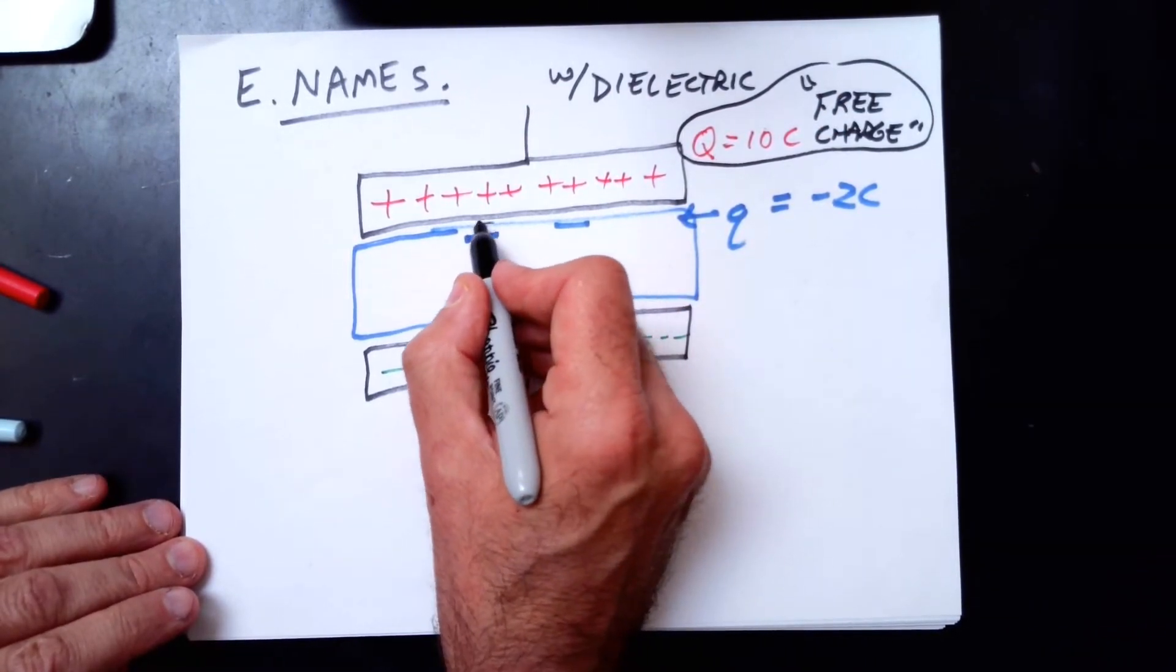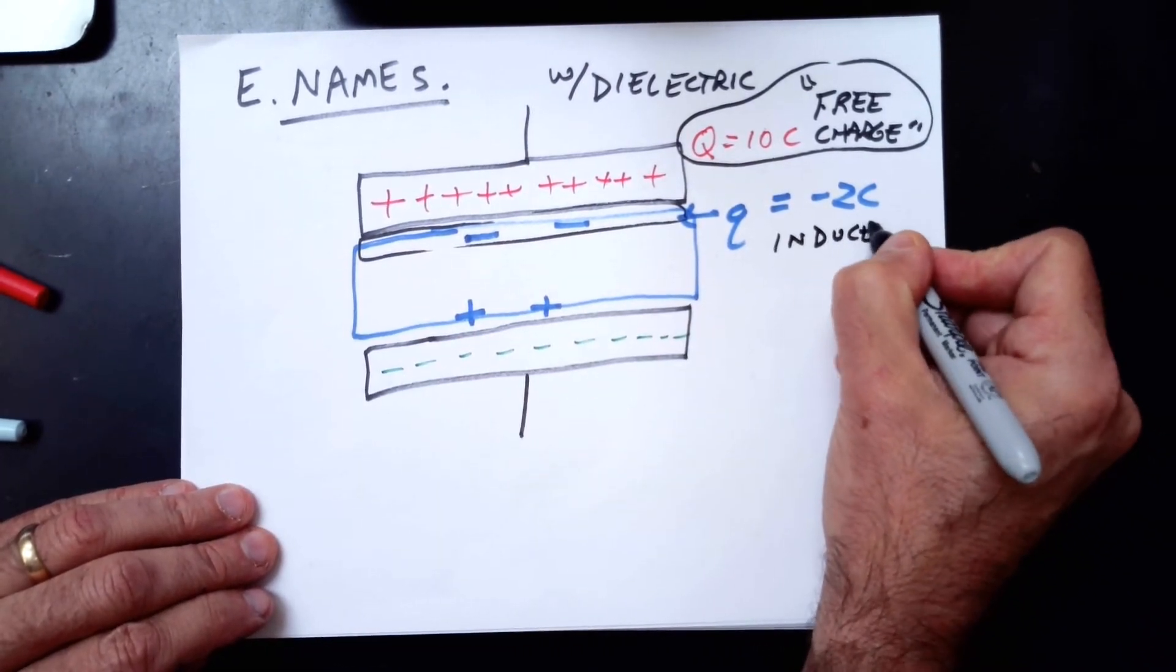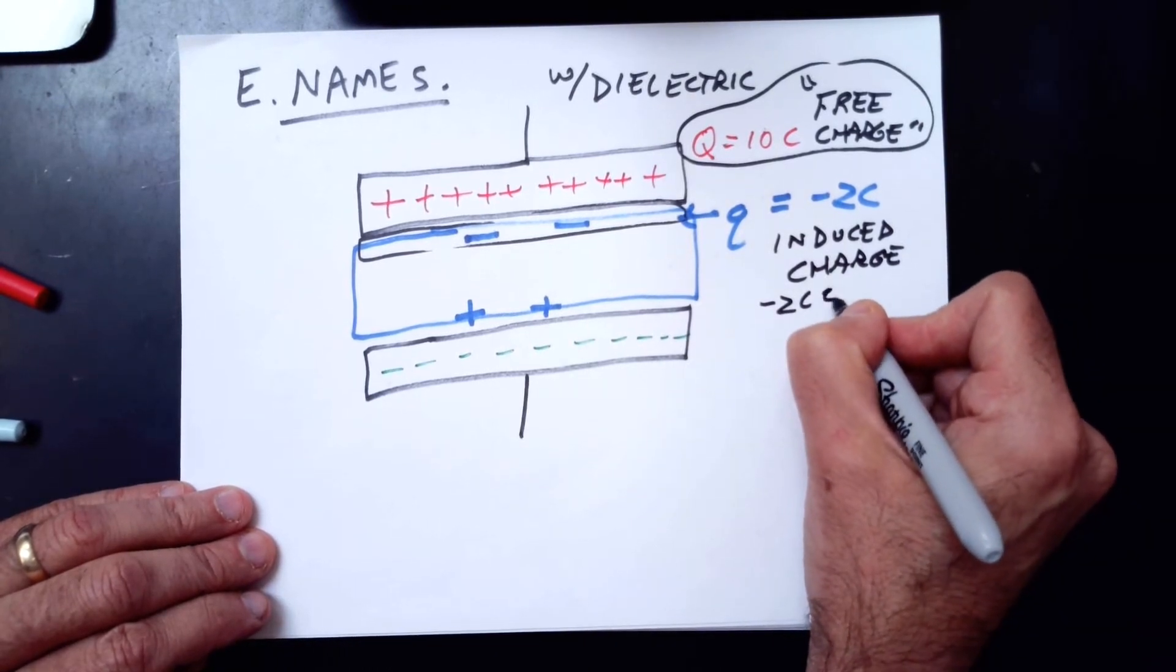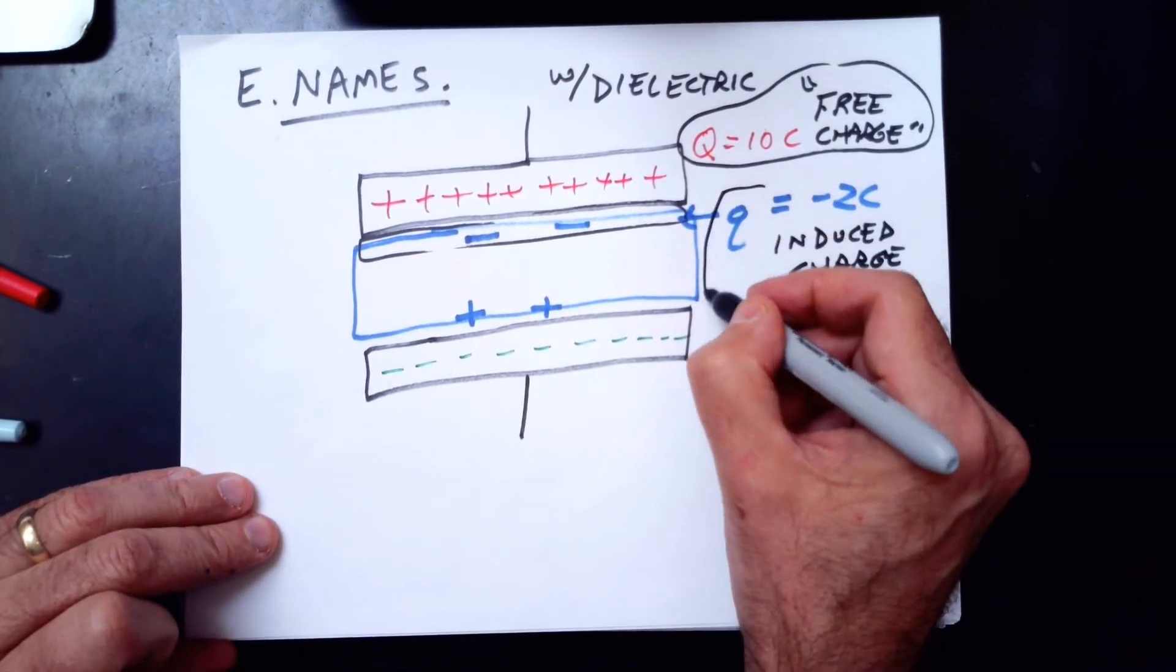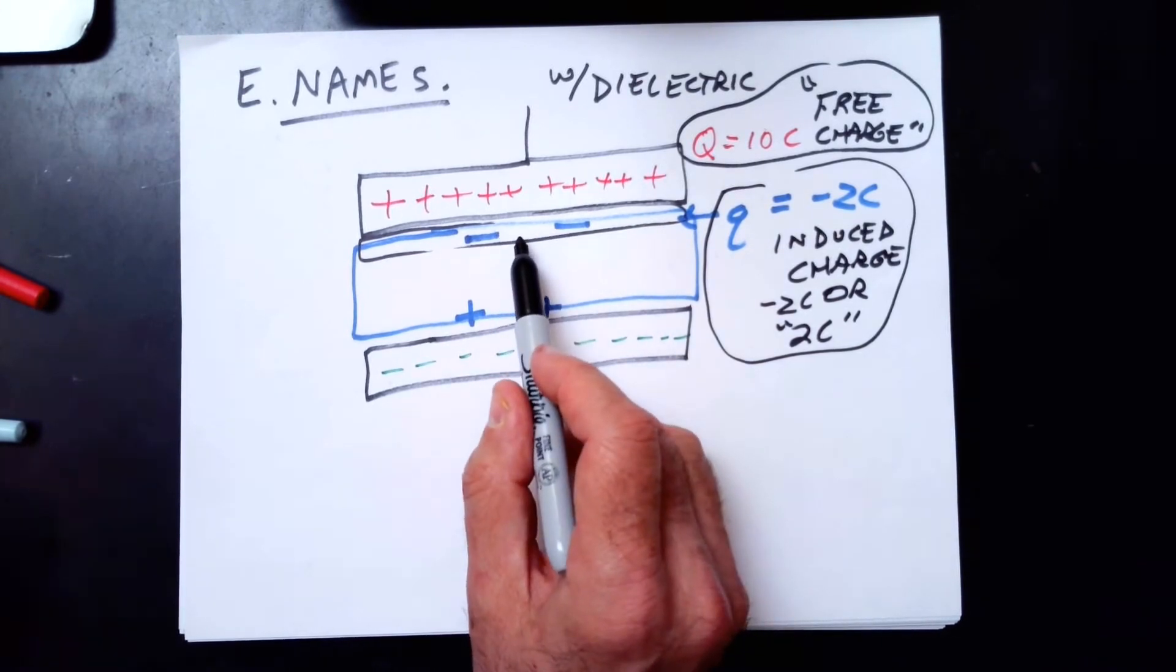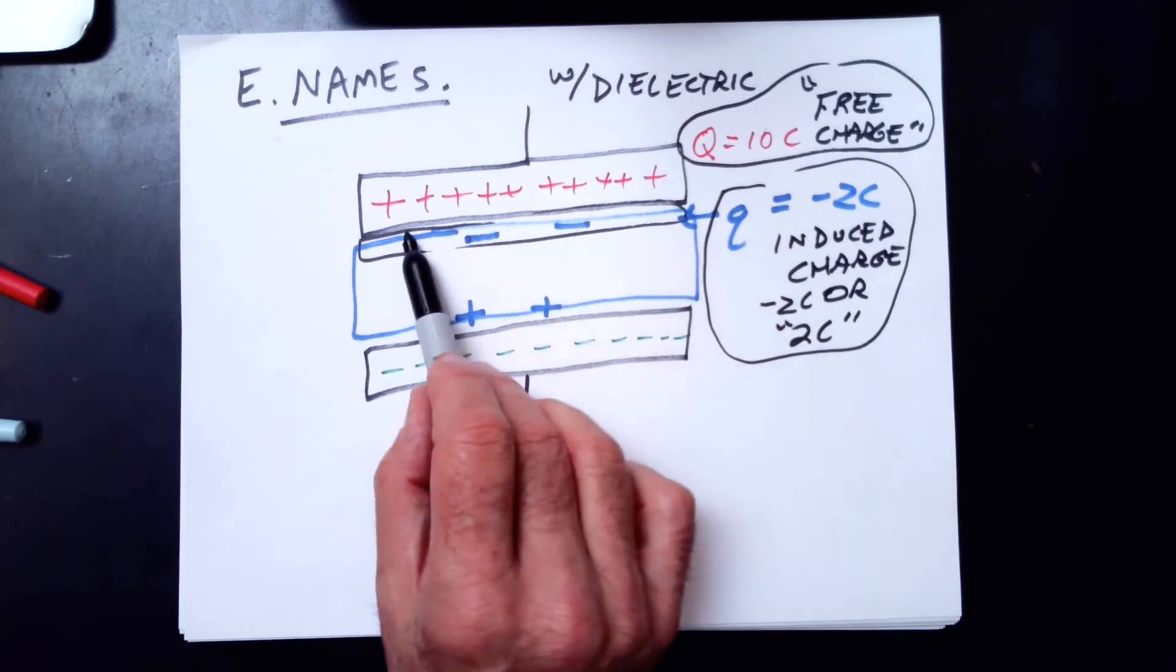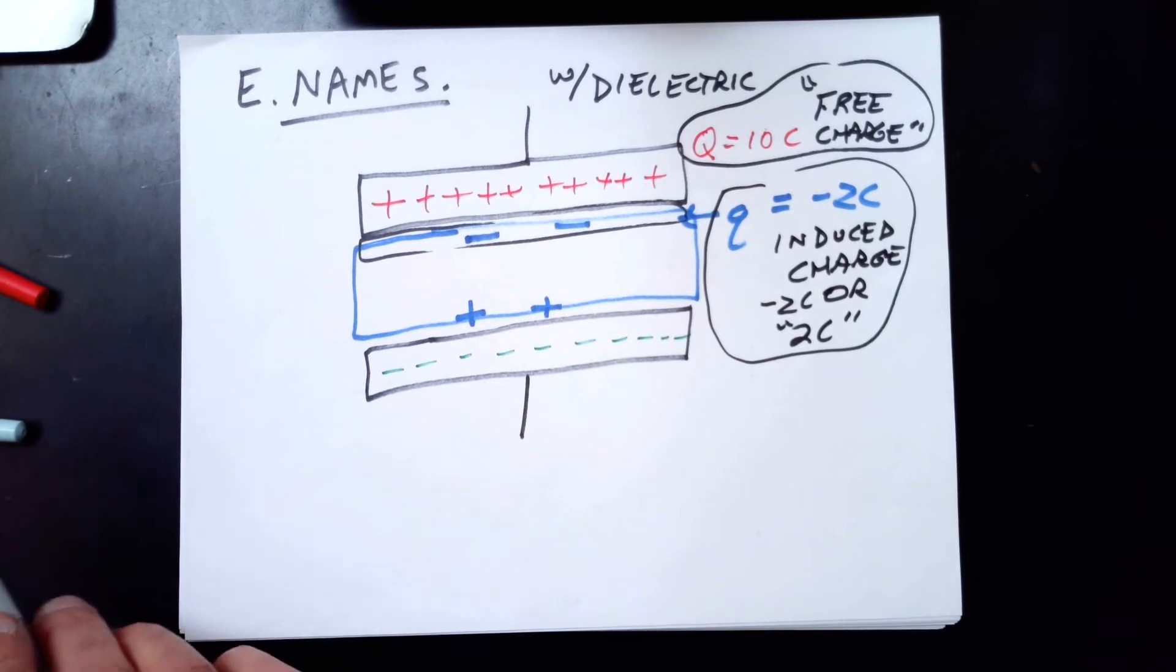Take a wild guess what this is called. This charge that's been induced here, this is called the induced charge. And it might be called negative 2 coulombs, or it might just be called 2 coulombs, giving just its magnitude rather than its sign. That's called the induced charge. It's not free to leave the dielectric and flow through the circuit. So this is the free charge that's on the plate. This is the induced charge that's in the dielectric, negative along the top skin of it, and positive along the bottom of it.